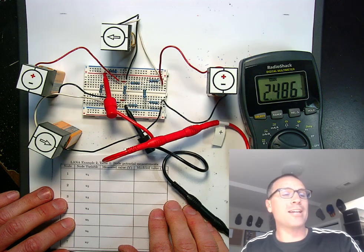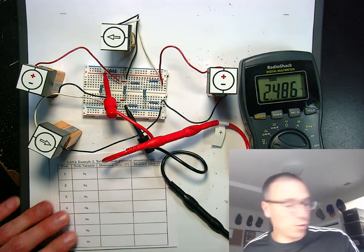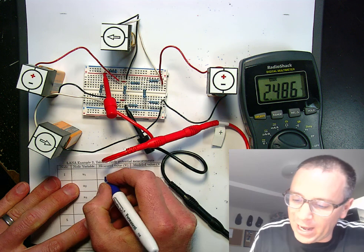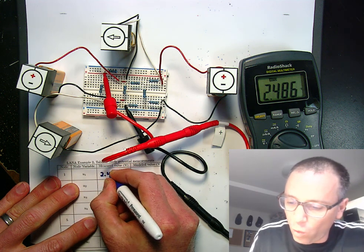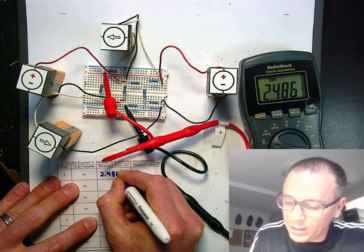Node 1 looks like 2.486 volts, so I'm going to go ahead and capture that as 2.486 volts.